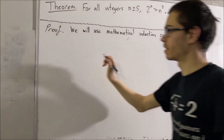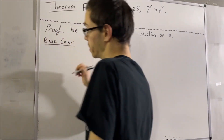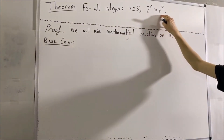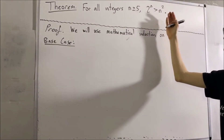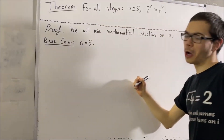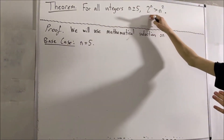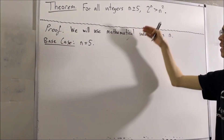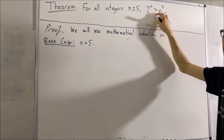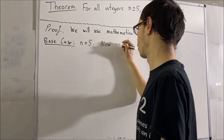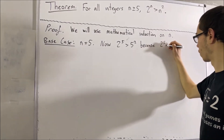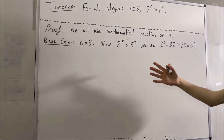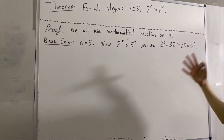So let's start with the base case. In the base case, all we're doing is verifying that this inequality holds in the case where n is equal to 5. This inequality is true if n is equal to 5 — we can all agree that 2 to the power of 5 is greater than 5 squared. And so this proves the base case. Now we're going to move on to the induction step.